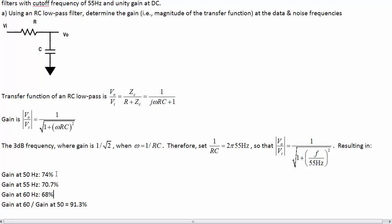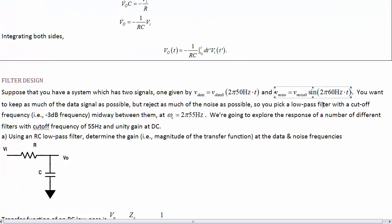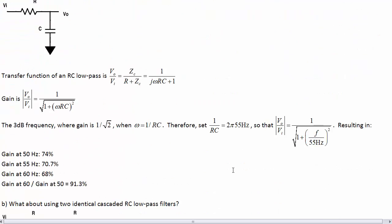So at 50 Hz we keep 74% of the signal and at 60 Hz we keep 68% of the signal. In other words, the noise is only reduced by a slight fraction more than the signal is. So just one RC filter is not going to cut it for doing what we want to reject this and keep all of this.